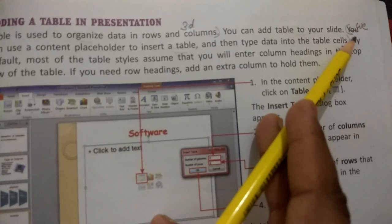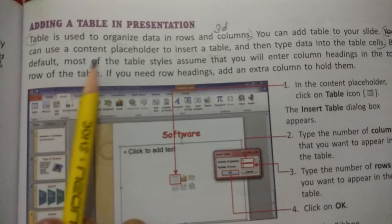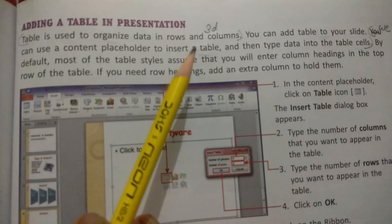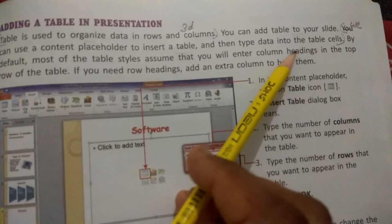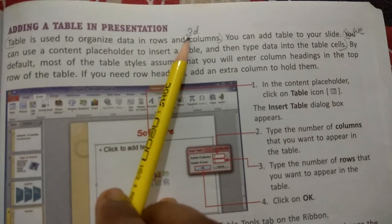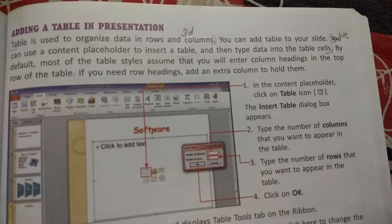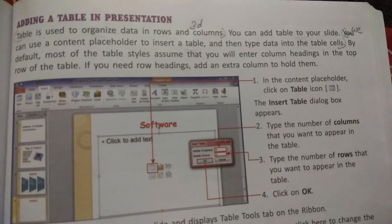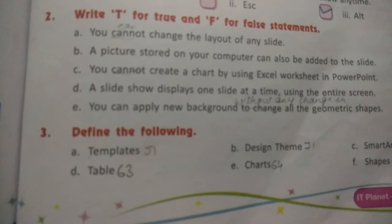We can use a content placeholder to insert a table and then type data into the table cells. Write down the answer number 3D. For answer number E, take out page number 64.